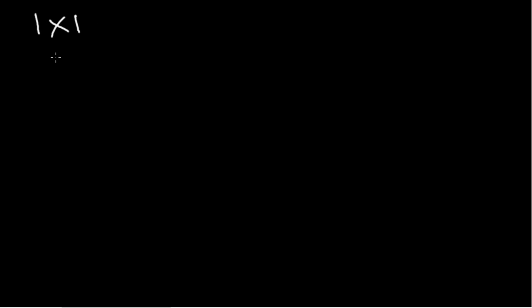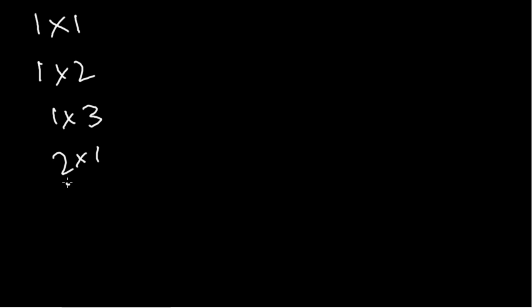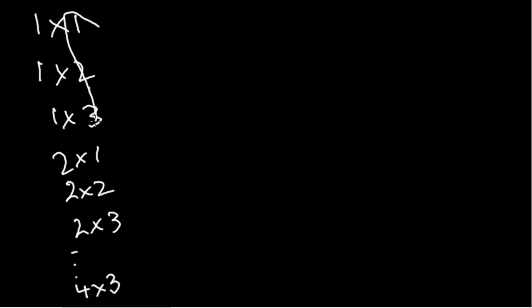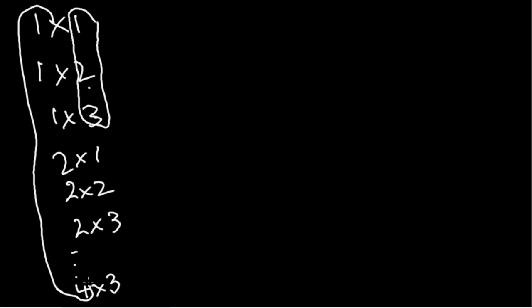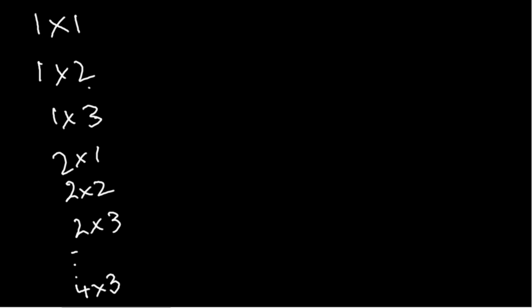Let's say I want you to give me the table of: 1×1, 1×2, 1×3, then 2×1, 2×2, 2×3, and so on up till 4×3. You can see one pattern dominating here — the second number goes up till three, and the first number progresses from one up till four.